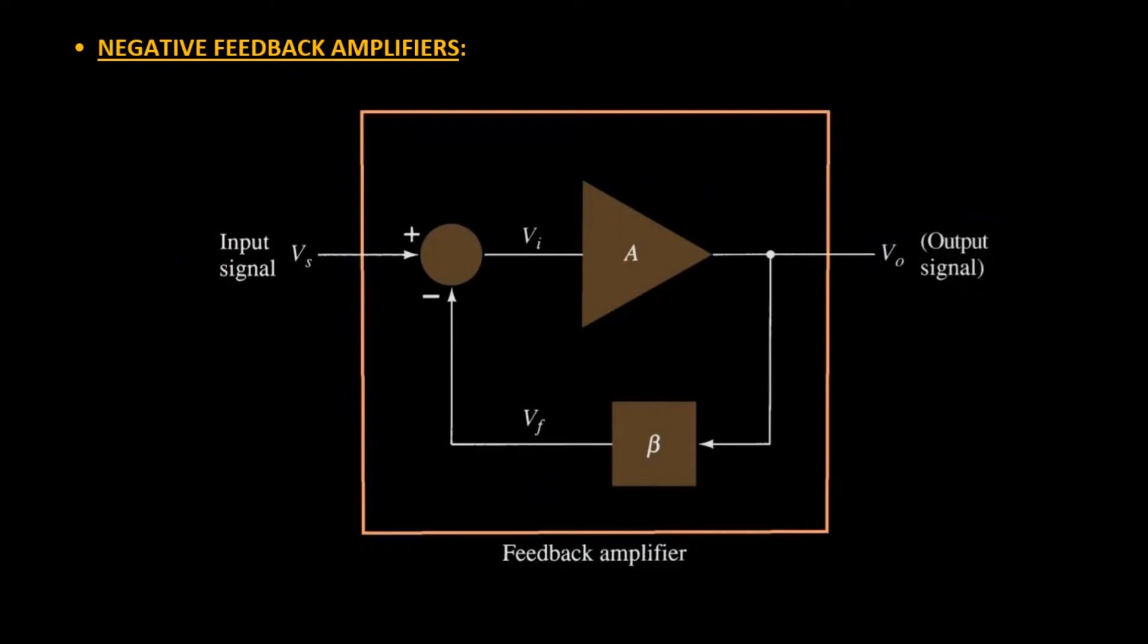The arrangement for both feedback types is almost similar. In the forward path we'll have one amplifier with gain A, and on the feedback path we'll have one amplifier with gain beta. Only one difference we can notice is the polarity of the feedback voltage. For negative feedback, this is provided as negative. For positive type, the polarity becomes positive. But for now, we'll be continuing with negative feedback type.